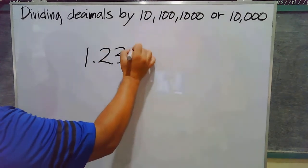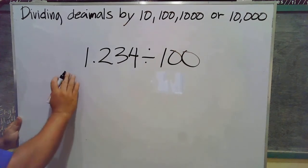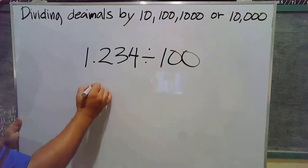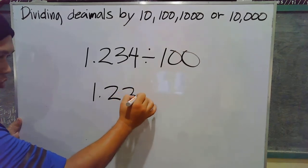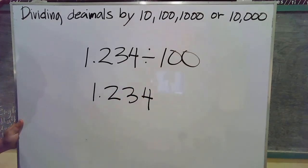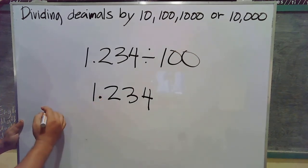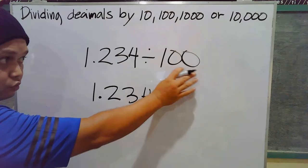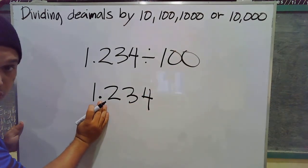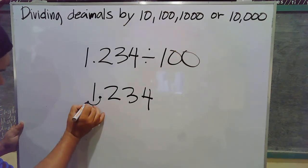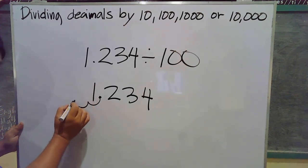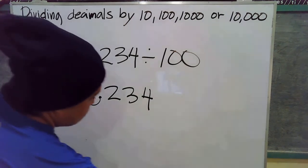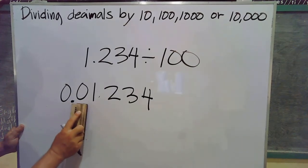Next example: 1.234 divided by 100. We have a decimal number divided by 100. Same procedure — copy the dividend, which is 1.234, then move the decimal point to the left depending on how many zeros the divisor has. 100 has two zeros, so we move two steps to the left. Counting: one, two — we still have one digit remaining, so we add a zero. Our answer is 0.01234.